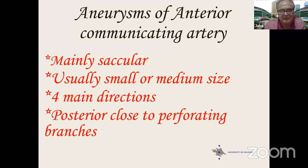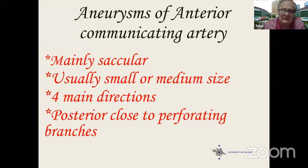There are four main directions. The inferior direction is directed to the chiasm and optic nerve. Then one forwards, then one upwards between the A2s. The posterior direction is posterior to the anterior communicating artery. As we saw in Victor Hugo Perez Perez's lecture, the posterior-directed aneurysms are very close to the perforating branches coming from the anterior communicating artery, and this is extremely important when treating these aneurysms by open surgery.